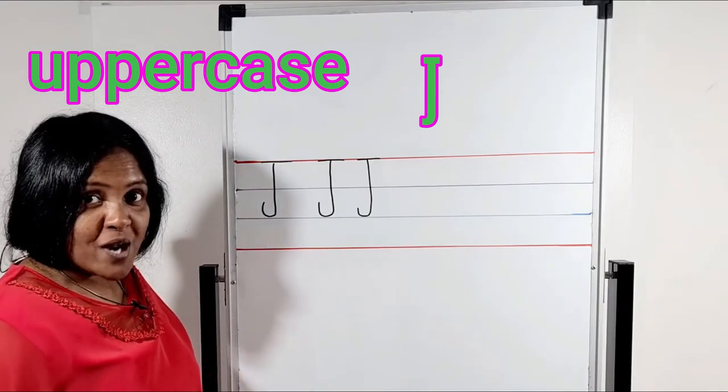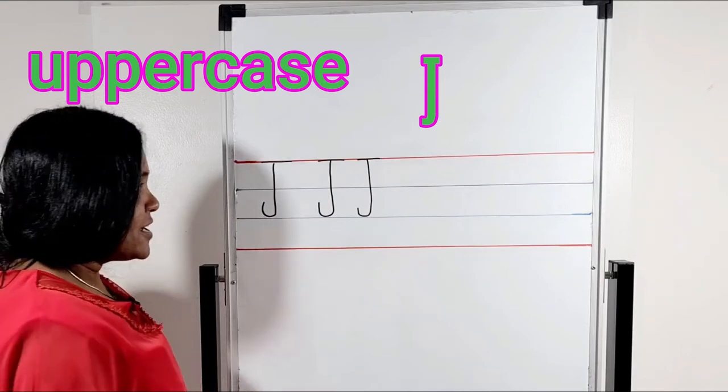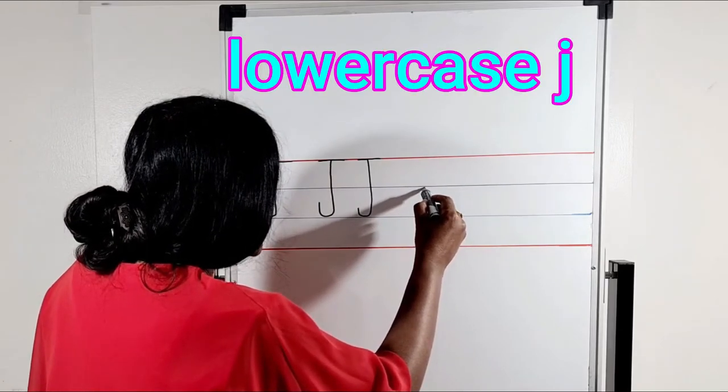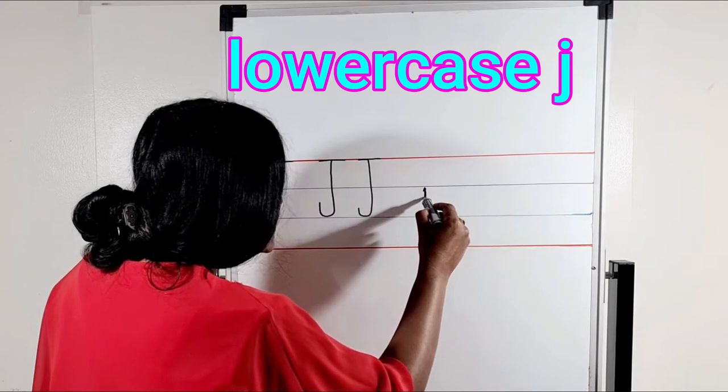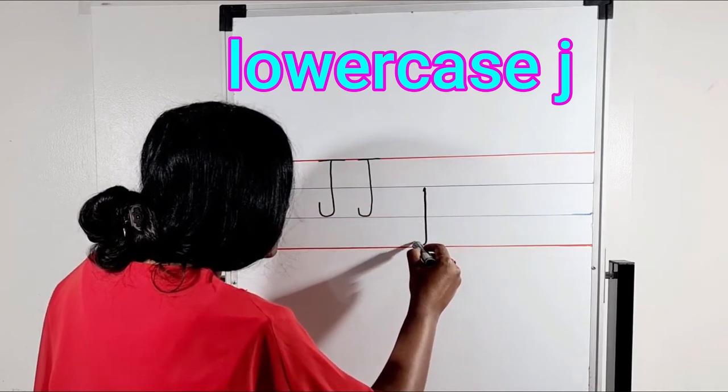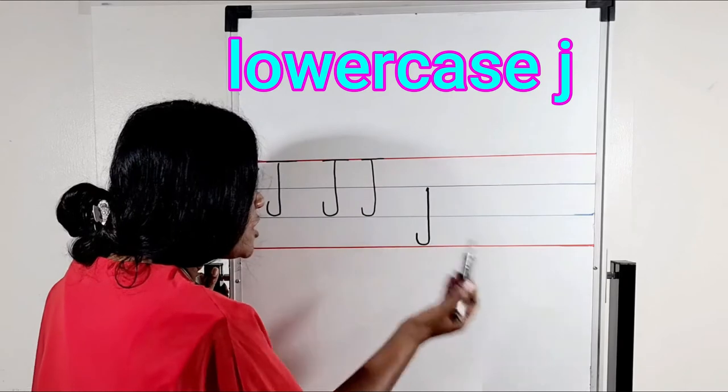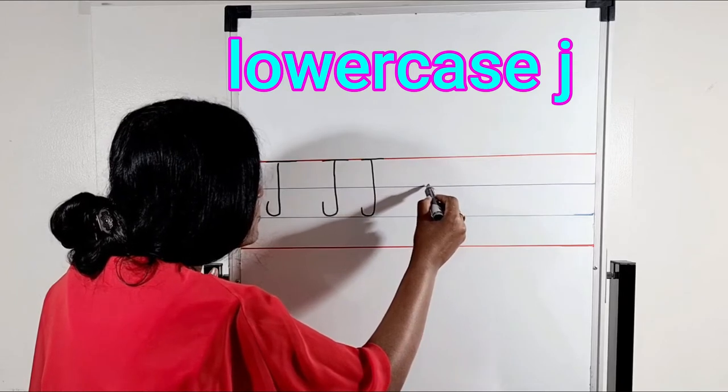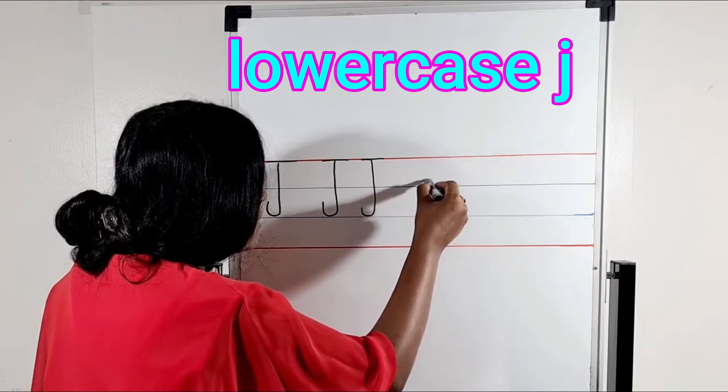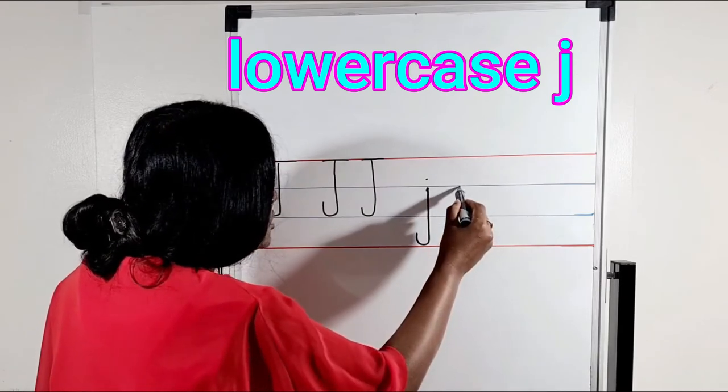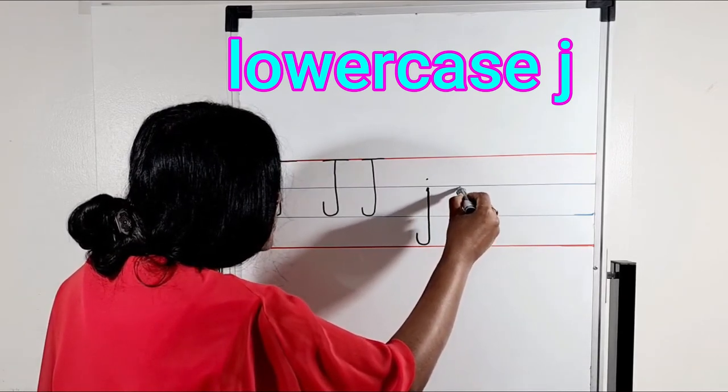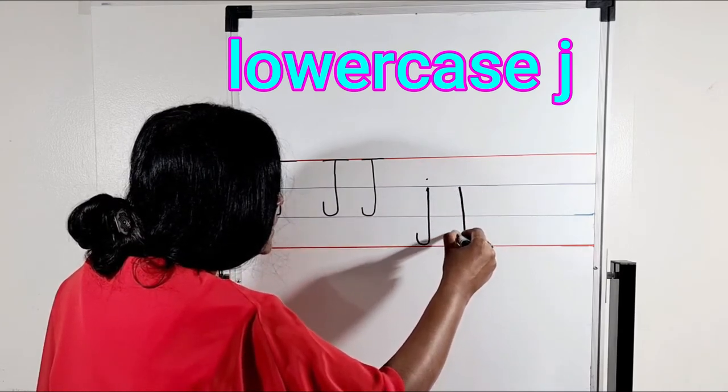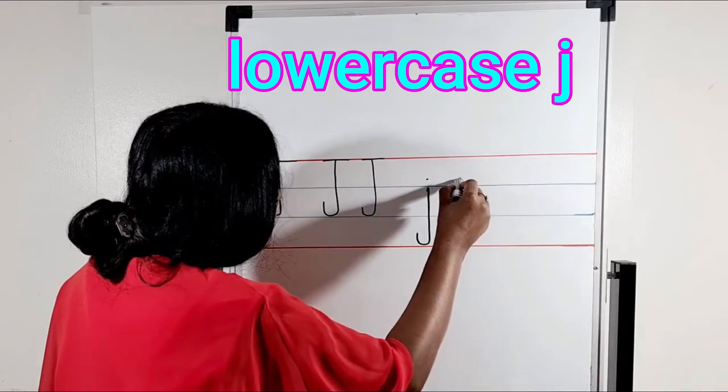Now we are going to write lowercase J. Lowercase J starts from the first tummy line. And we will go to the leg line. A standing line. And a hook. The same way we will draw a hook. And here beyond from the first tummy line, we will keep a dot like this. One more time. A standing line starts from the first tummy line. And it goes to the leg line. And a hook. And a dot.